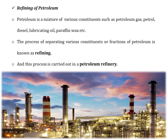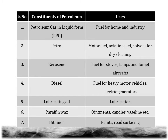We cannot use petroleum as such. Petroleum is a mixture of various constituents such as petroleum gas, petrol, diesel and lubricating oil. The process of separating these various constituents or fractions of petroleum is called as refining, and this process is carried out inside a petroleum refinery. Some of the constituents and their uses: LPG (liquefied petroleum gas) is mainly used as a fuel for home cooking and industry. Petrol is used as a motor fuel, aviation fuel, and solvent for dry cleaning.